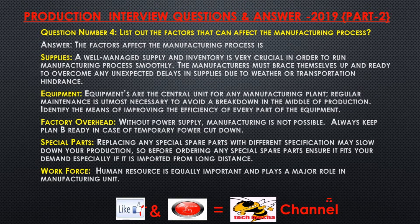Question number four: List out the factors that can affect the manufacturing process. Answer. One factor is supplies. A well-managed supply and inventory is very crucial in order to run the manufacturing process smoothly. Manufacturers must be ready to overcome any unexpected delays in supplies due to weather or transportation hindrance.